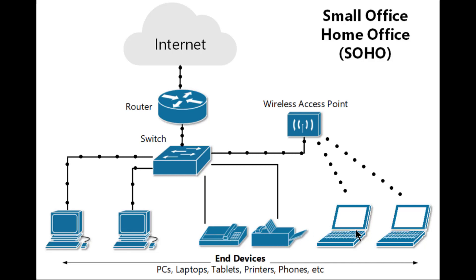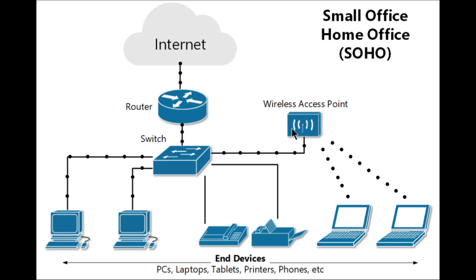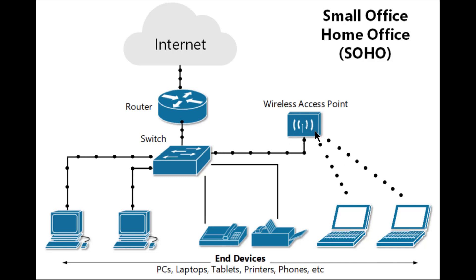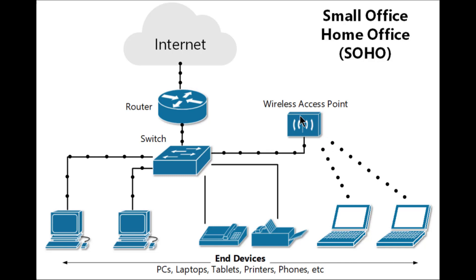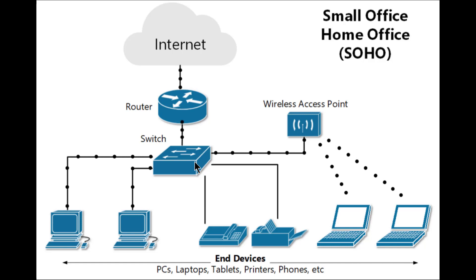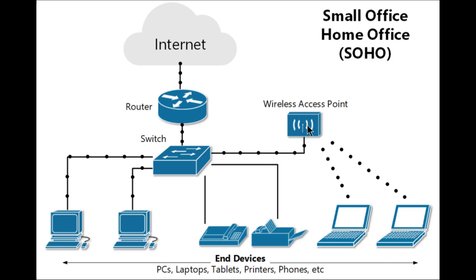The next device is an access point. A wireless access point is a wireless network device that is connected to a local area network, purposely to extend the coverage area of the network. For example, if you have a SOHO network with multiple rooms — say about five rooms — and the bandwidth is very weak, you need an access point to extend the area coverage of the network, thereby adding more users.